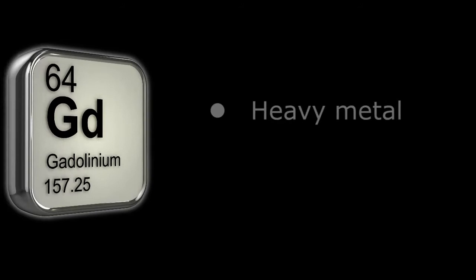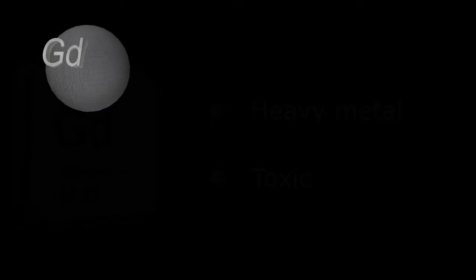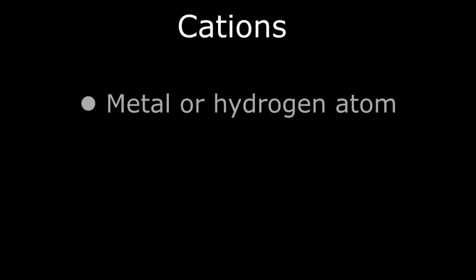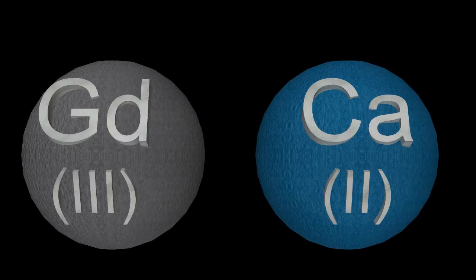So that basically describes the physics behind gadolinium contrast. The problem is gadolinium is a heavy metal and is quite toxic in the human body. One of the reasons it's so toxic is the fact that its most common cation, gadolinium plus 3, is about the same size as one of the most important metal cations in our body, calcium plus 2, both measuring about 0.99 angstroms in diameter. A cation is formed when an atom, usually a metal or hydrogen, gives up one or more electrons and becomes positively charged.